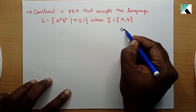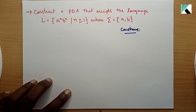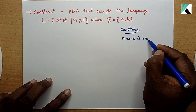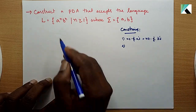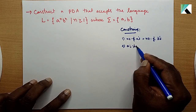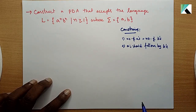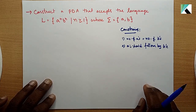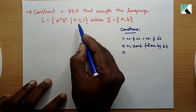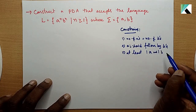Before going to this problem, let's discuss the conditions for this language. First condition: the number of A's must equal the number of B's. Second condition: A's should be followed by B's - B's must follow A's. Third condition: at least one A and one B must be present, since n is greater than or equals to one.